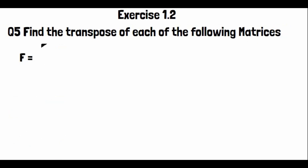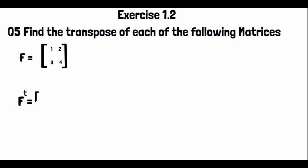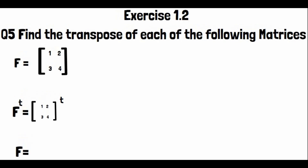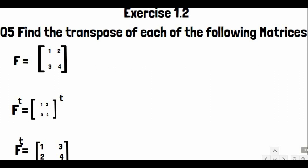Matrix F has entries [1, 2; 3, 4]. To find F transpose, we put a superscript t on F and convert columns to rows. F^T equals [1, 3; 2, 4].